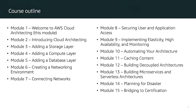In this Solution Architect course, we are going to study 15 modules. We will start with an introduction to cloud architecting, then study how to add a storage layer, a compute layer, a database layer to the cafe business, and how to create our networking environment in AWS, manage multiple VPCs in the cloud, secure user and application access, implement an elastic and highly available architecture, and automate your architecture using CloudFormation.